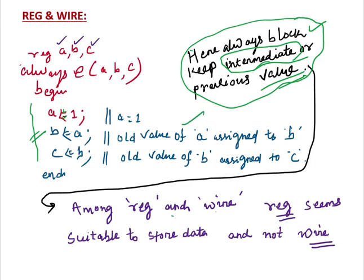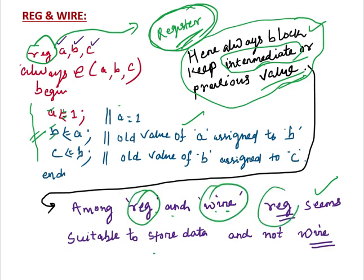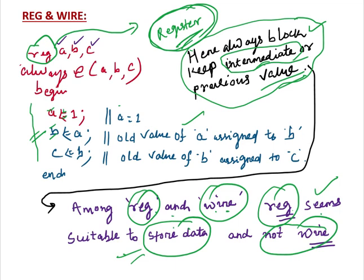Among Reg and Wire, Reg seems suitable because the data has to be stored. Data has to be stored means a register stores this value. We know that Reg mostly corresponds to memory or register. So if you are given a choice between Reg and Wire for variables A, B, and C, definitely Reg seems more suitable to store data — it stores the previous data. So Reg seems more suitable, not Wire.